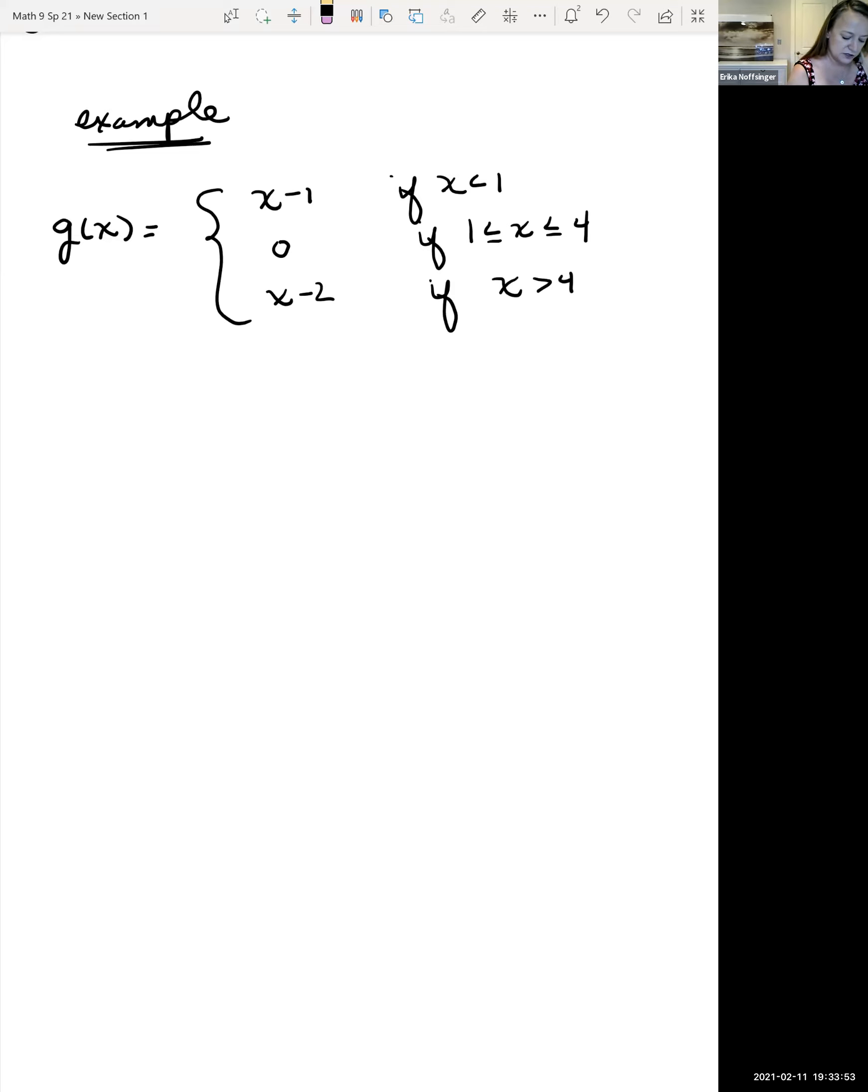So first thing that it wants us to do is to graph this. We're going to have three separate pieces of a graph and we have to be careful. We have to be cognitive of where our domain is for that equation. And so for the first equation, x has to be less than 1. Maybe you could plot points here if you want to. So let's say y equals x minus 1, x is less than 1.